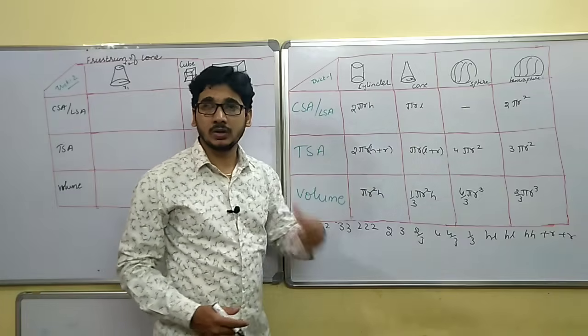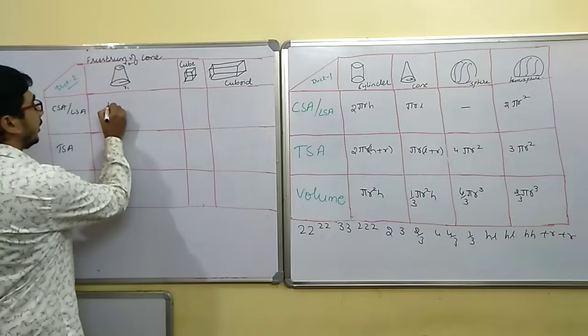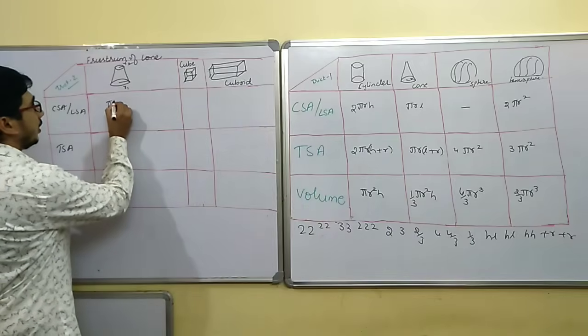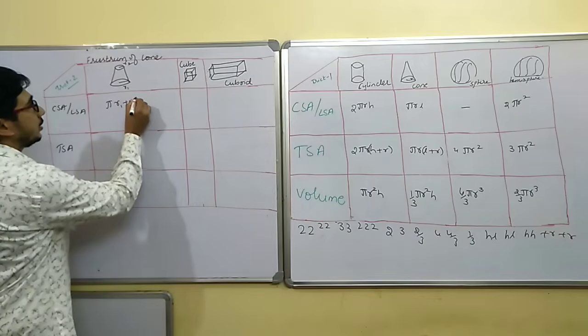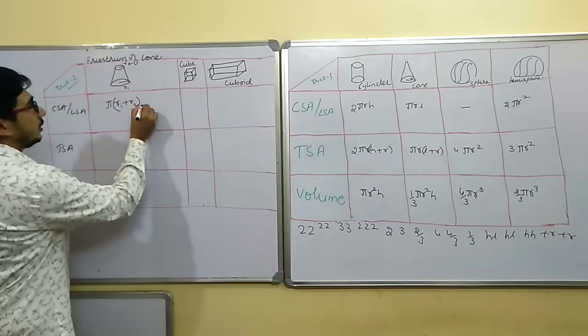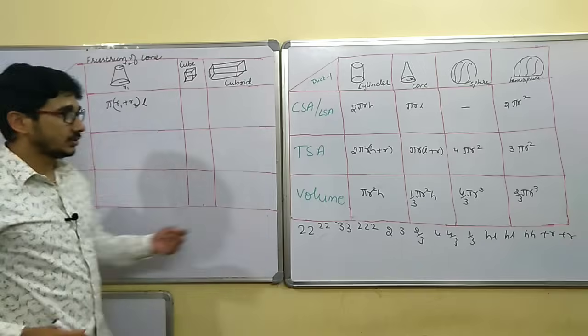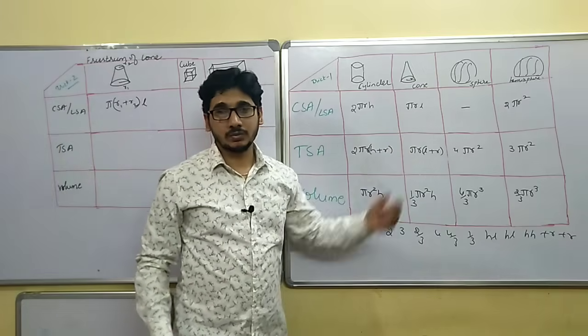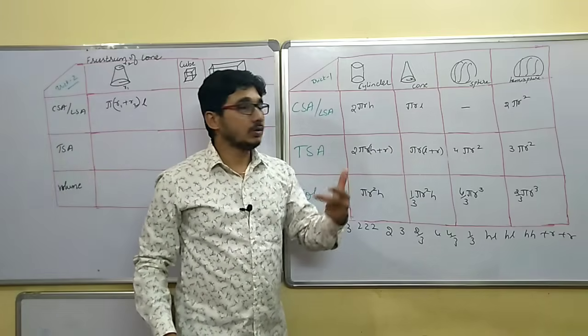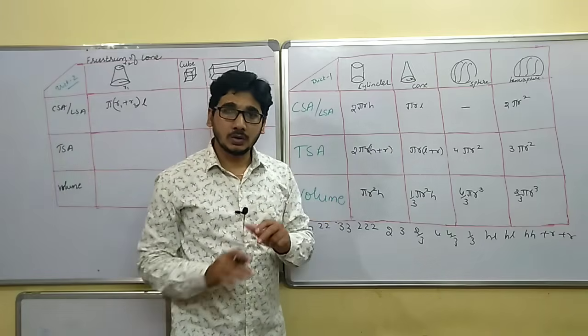Write down r1 plus r2, so pi(r1 plus r2) under bracket — write down l as it is. So in the place of r, write down r1 plus r2.